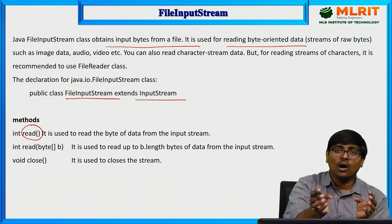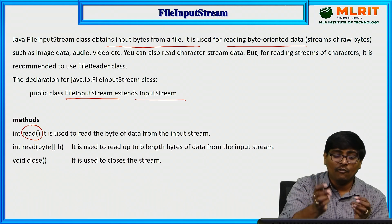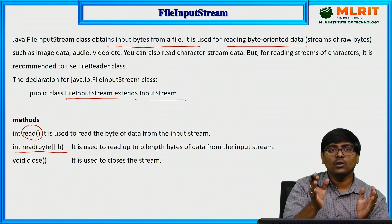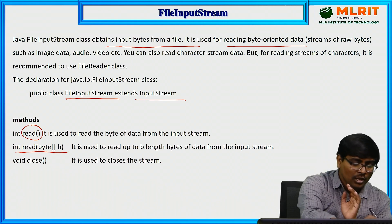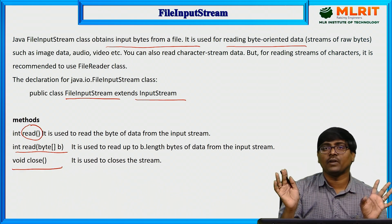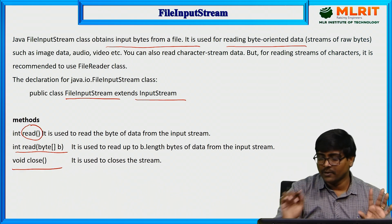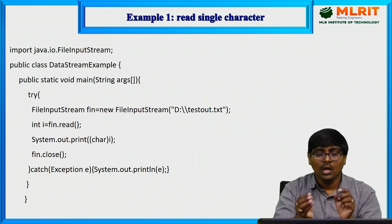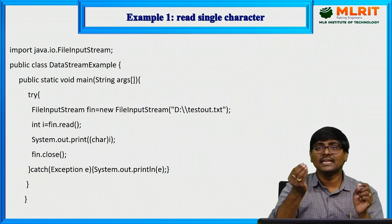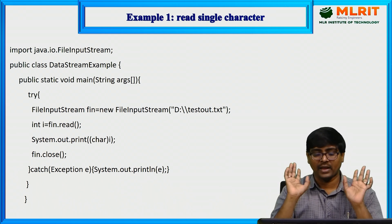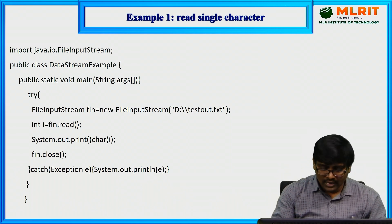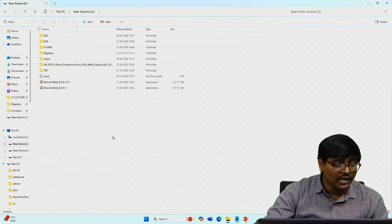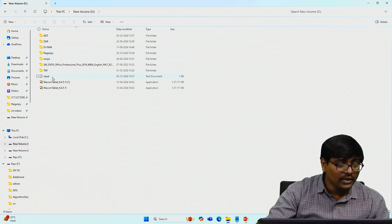If you want to read an array of bytes, you can use the read array method. After closing your operation, you need to close the file. Now we are moving to the example — how to read a single character from a file. In the D drive, I created one text document.